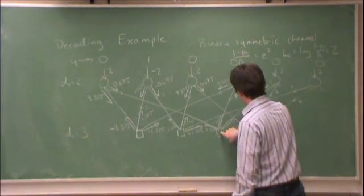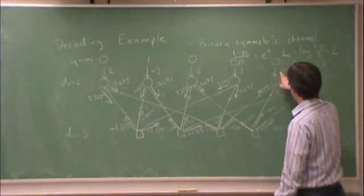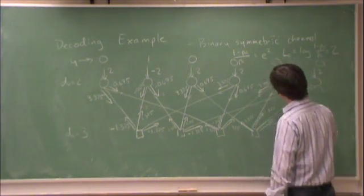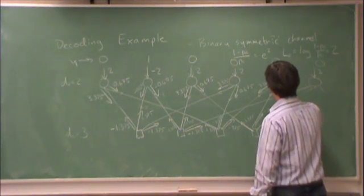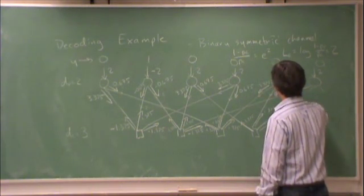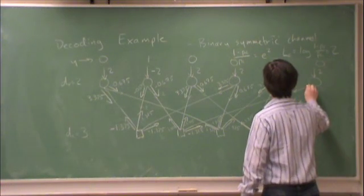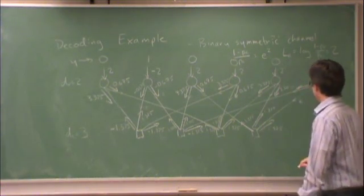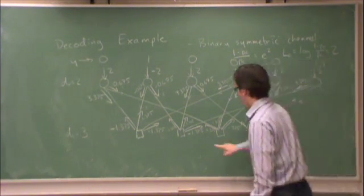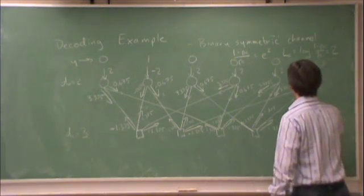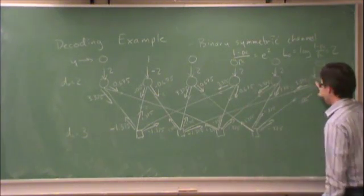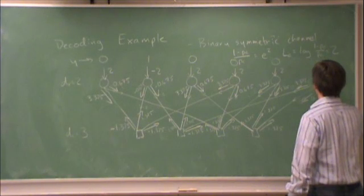So that is minus 1.325 and 3.325. Along here, I have minus 1.325 and 2, which is 0.325. Along here, I have minus 1.325 and 2, which is 0.325. Along here, I have minus 1.325 and 2, which is 0.675.